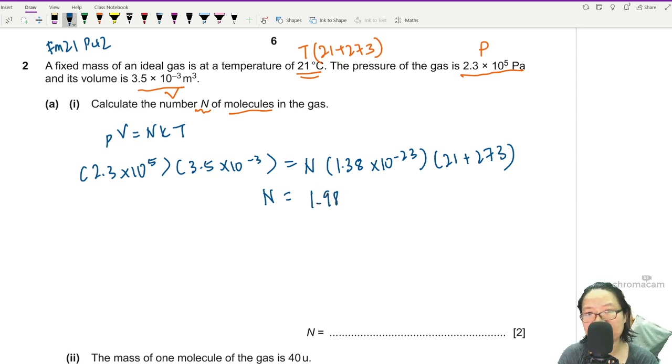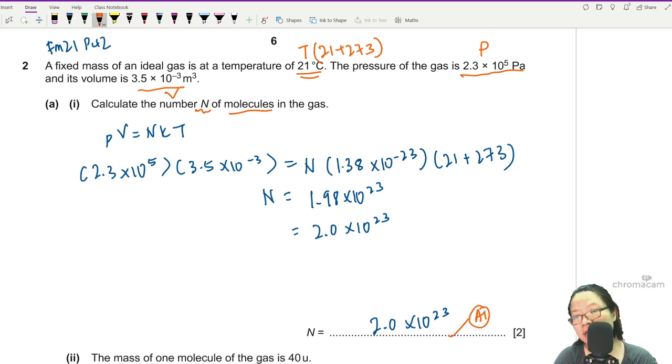Alright, so if you press carefully that should give you an answer of 1.98 times 10 to the power of 23. As usual, they tend to appear as 2SF in the final form. So you can write 2 to 3SF is acceptable. Alright, so where are the marks? You get this answer, you get A1. Okay, and if you substitute everything correctly including converting the temperature to Kelvin, you will get C1.